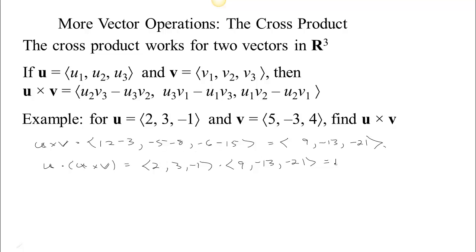2 times 9 is 18. 3 times negative 13 is negative 39. And negative 1 times negative 21 is 21. So let's see, 18 and 21 would be 39, and minus 39 makes 0. So yes, that checked out.